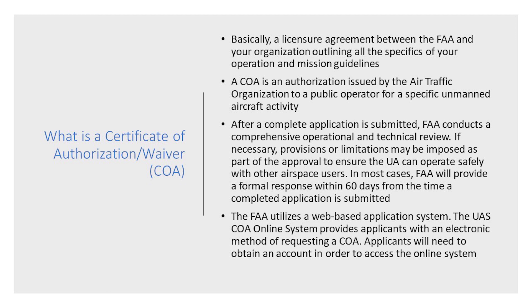The COA authorization itself is issued by the air traffic control organization and it's for specific unmanned activities. After the complete COA application is submitted, the FAA conducts a comprehensive safety and technical review and, if necessary, they'll ask you to go over your provisions and possibly change some provisions prior to approval. In most cases after filing the COA you'll get a response within 60 days — either they'll accept it and issue you a draft copy while they finalize it, or they'll ask you to make some changes. What's unique about it is it's a web-based application process. Prior to October 30th, 2017, it was housed within the FAA's own systems, and now it is on a DOT-based FAA system.